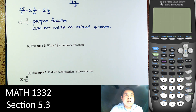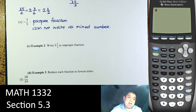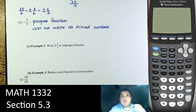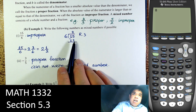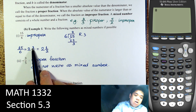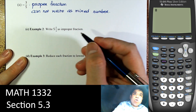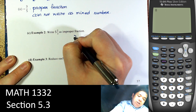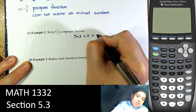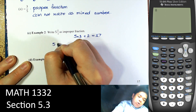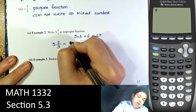Write 5 and 2/3 as an improper fraction. This is a mixed number, and we just have to write it as an improper fraction. When converting to improper, we multiply: 5 times 3, then plus the top 2, that's 17. So 5 and 2/3 equals 17 over 3.